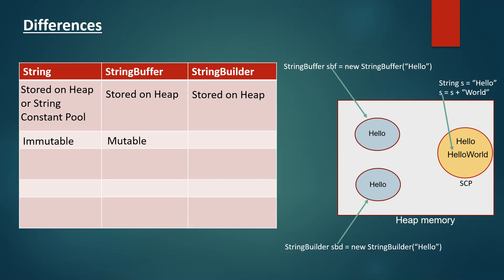StringBuffer is mutable — the contents of a StringBuffer object can be modified using its methods. For example, stringBuffer.append() appends a string to the existing string, so the existing string gets modified. "Hello" with append("world") becomes "hello world" now. StringBuilder is also mutable — we can modify the StringBuilder object the same way, and the existing object itself gets modified without a new object being created in the heap. That's the main difference between String and the StringBuffer/StringBuilder classes regarding mutability.